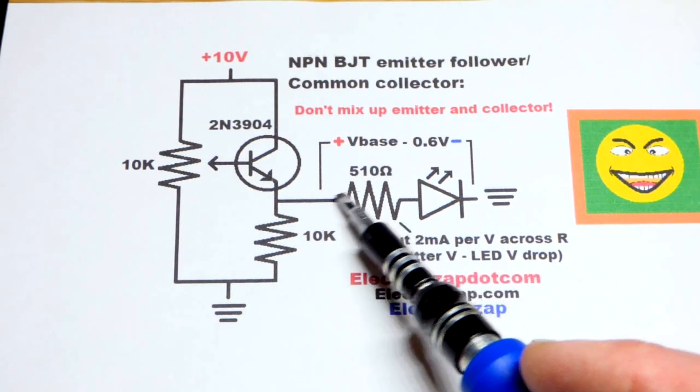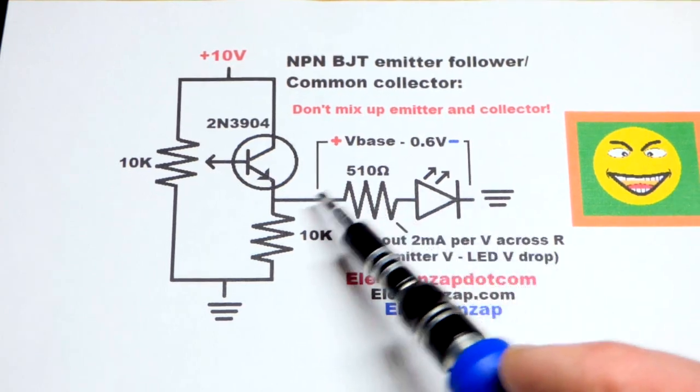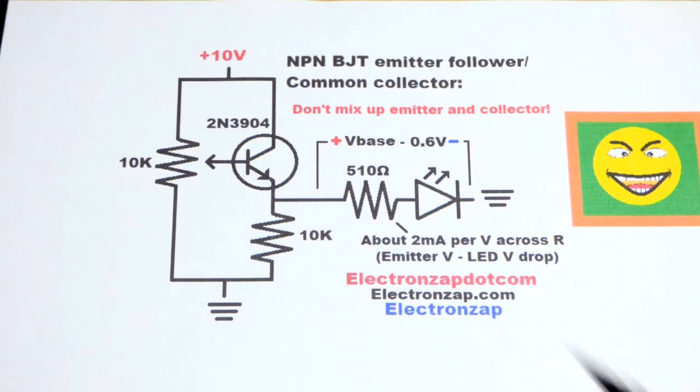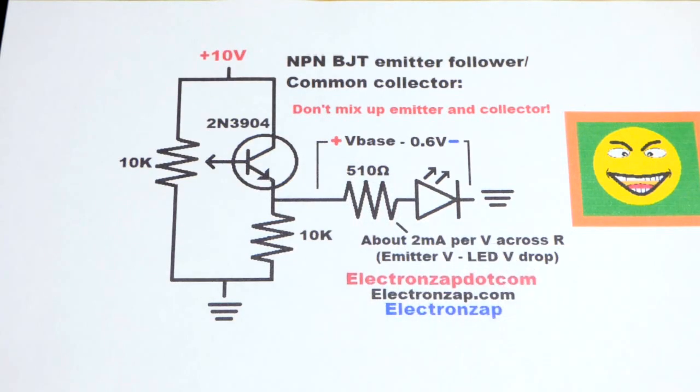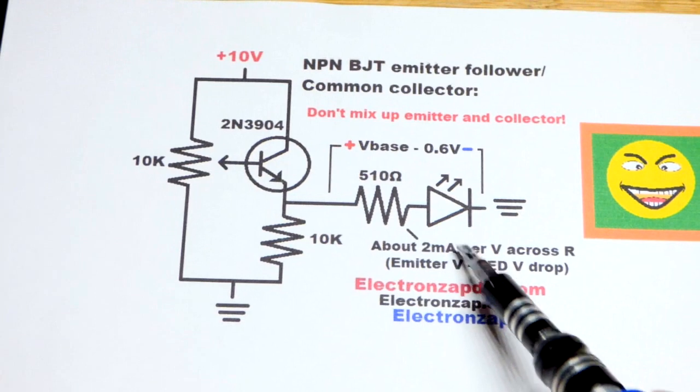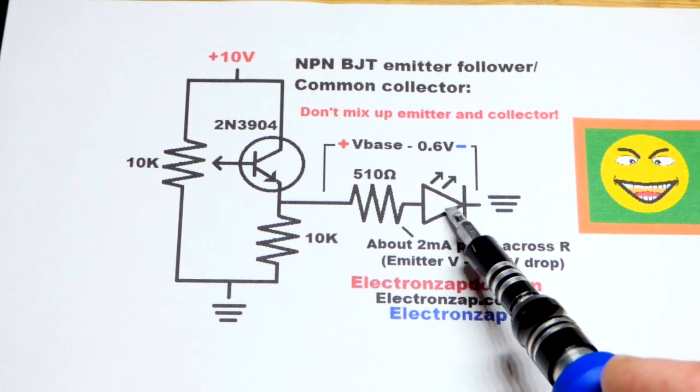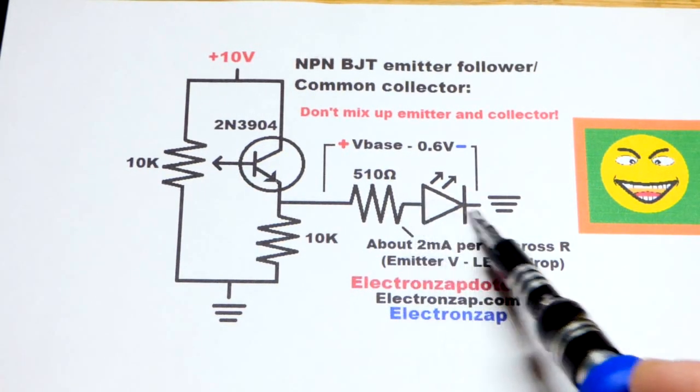There'll be 1 milliamp of current that flows per volt across the resistor. So 500 ohms is half of that. We'll have about 2 milliamps per volt, approximately. And so the LEDs, they can only handle about 20 milliamps maximum when they're forward biased, lit up.